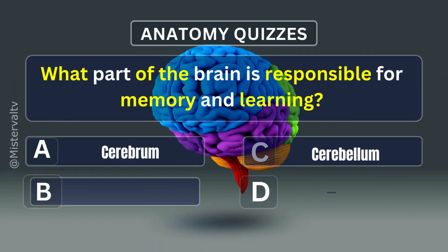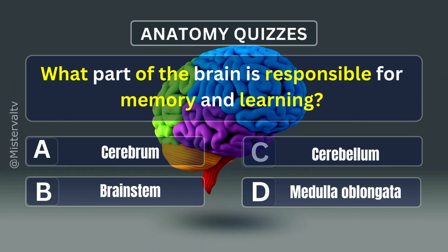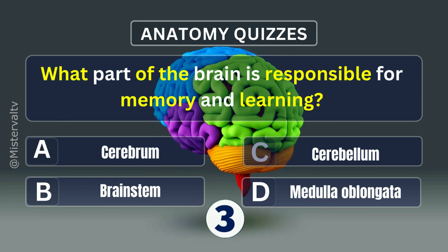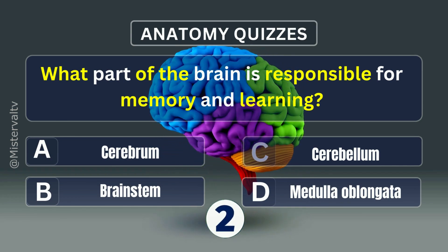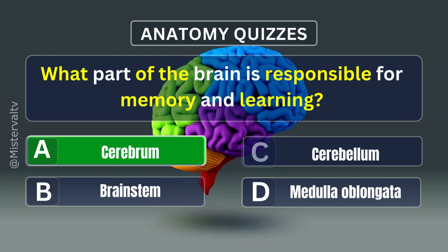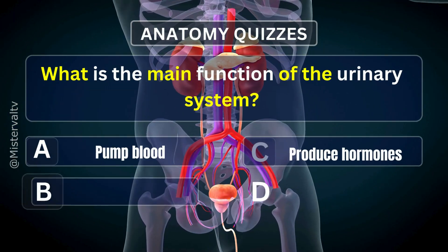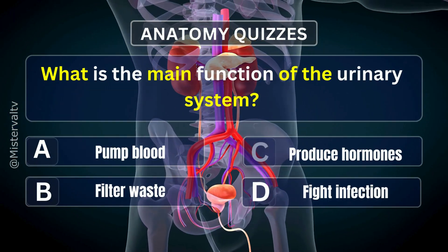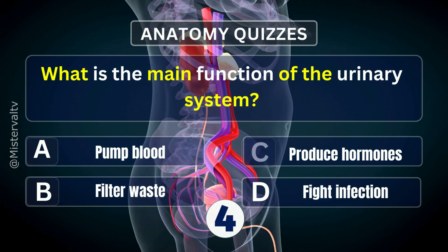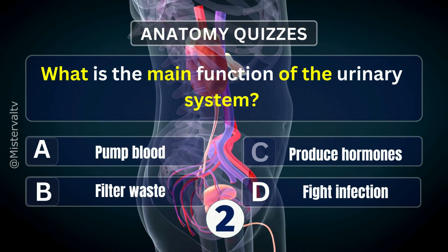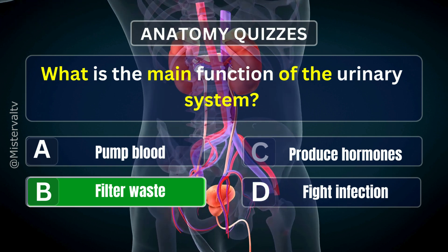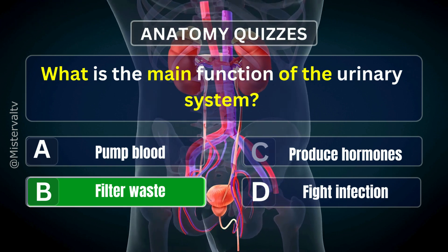What part of the brain is responsible for memory and learning? Answer. A. Cerebrum. What is the main function of the urinary system? Answer. B. Filter waste.